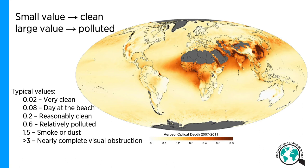In general, a small value of AOD represents clean air, and a large value represents polluted air. Some typical values: 0.02 is very clean air; 0.08 is what you might see on a day at the beach with just a tiny bit of haze over the sea. Even 0.2 is considered reasonably clean, but once you get to 0.6 that's where you start getting into relatively polluted air — in terms of health, this might be called unhealthy for sensitive groups. A value of 1.5 is what you might see as smoke or dust, and anything above 3 is nearly complete visual obstruction, which can happen in extreme cases in China or India during a smog episode.